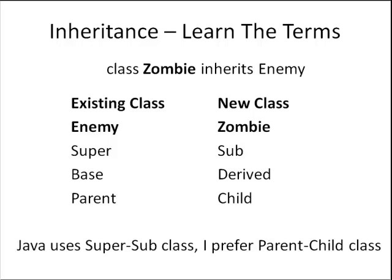It's an important component of inheritance that the new class add new functionality to the class it inherits from. Much of the problem with understanding inheritance is once again different terms are used to describe the classes. When a class zombie inherits enemy, the existing class is enemy and the new class is zombie. We call enemy the super class and zombie the sub class that was created from enemy.